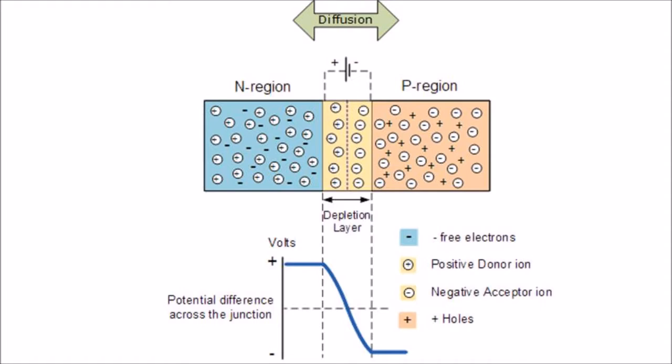Similarly, the higher concentration of holes in the P-type side near the PN interface begin to diffuse into the N-type region, leaving fixed ions with a negative charge.